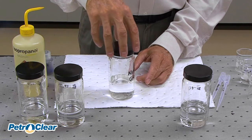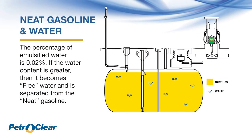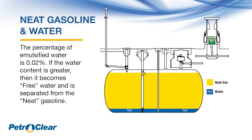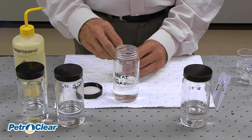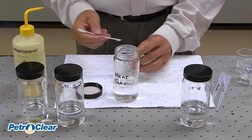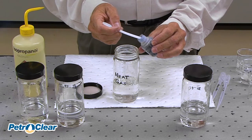We'll start by taking a container of fuel we'll call neat gasoline or straight gasoline. We are using, for safety purposes, a substitute for gasoline. It is Soltrol 170 from Phillips 66, an aliphatic hydrocarbon. It has the same properties as gasoline but it is not as volatile.